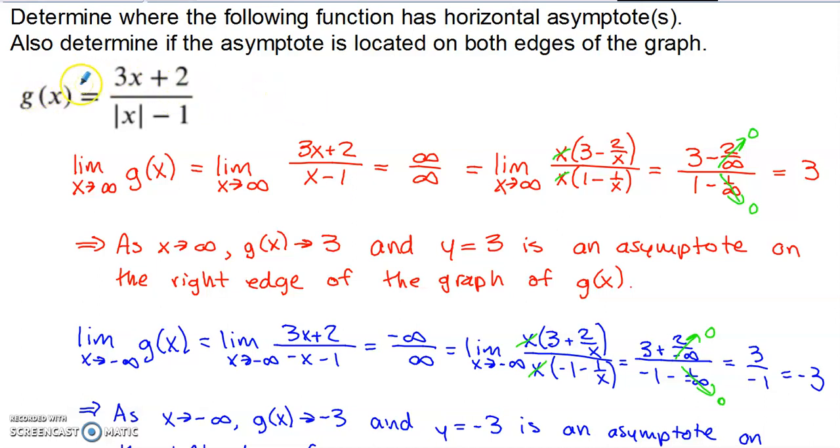In this video, we're going to take a look at this function g(x) right here. The fact that g(x) includes these absolute values is going to make this problem a little trickier than if the problem didn't have them. What we're going to be trying to do is figure out where we have horizontal asymptotes, and then we're also going to try to see if the asymptote is located on both edges of the graph.